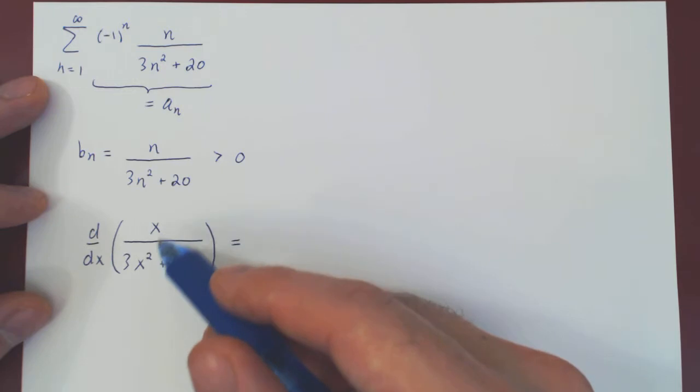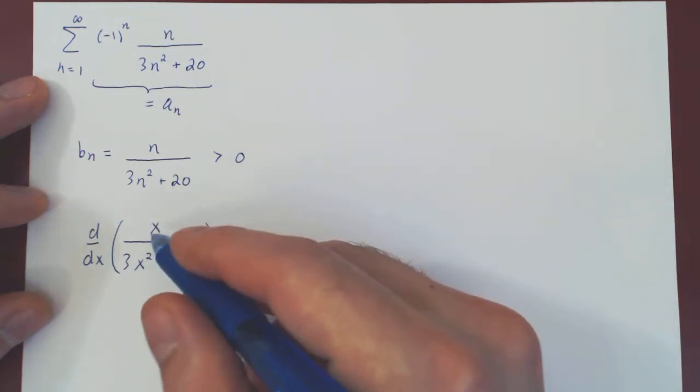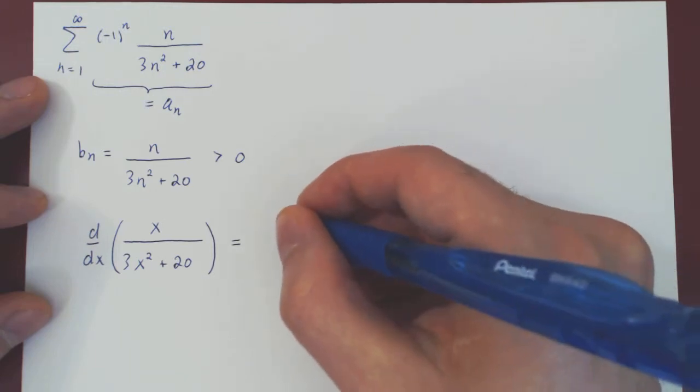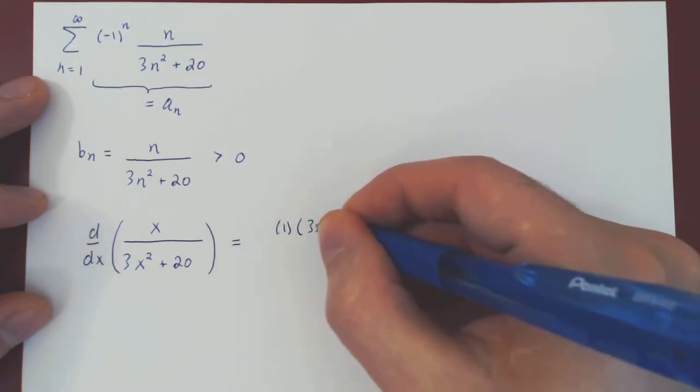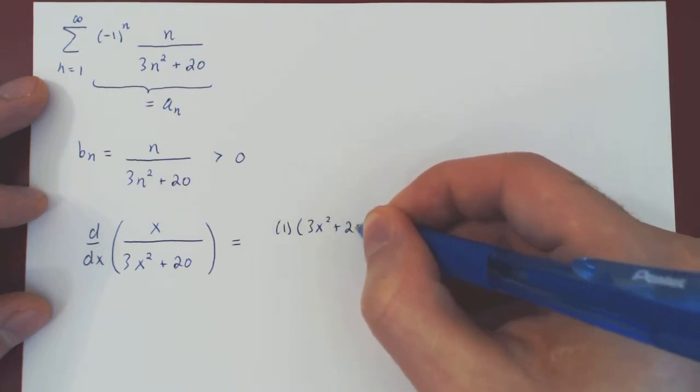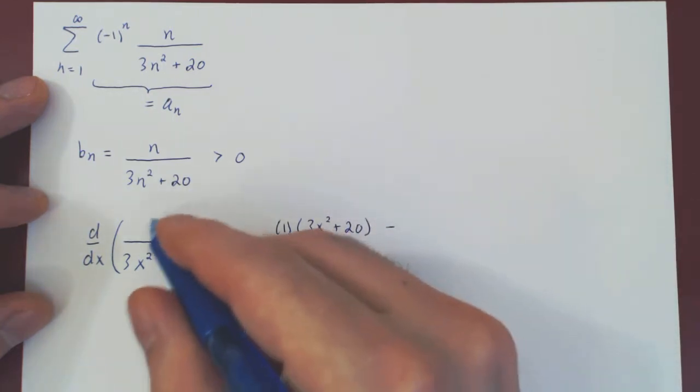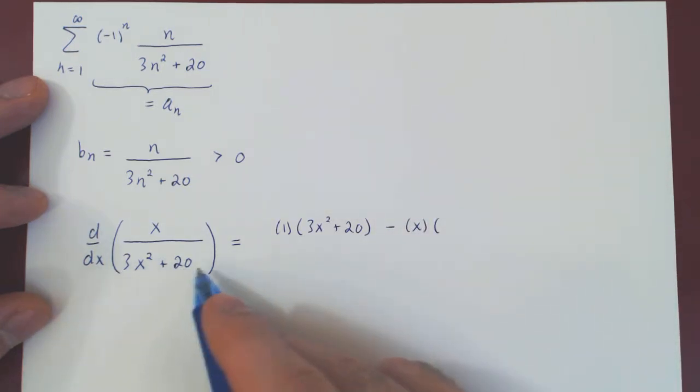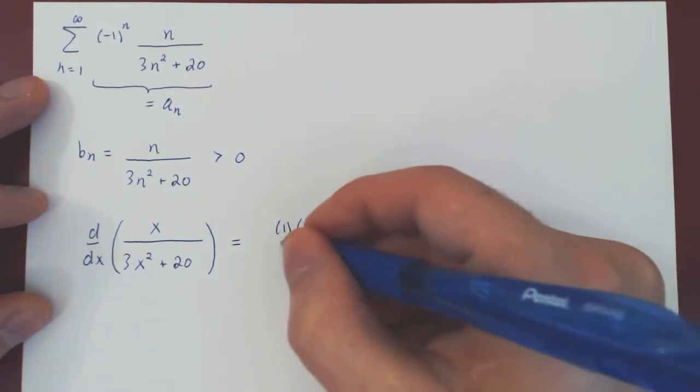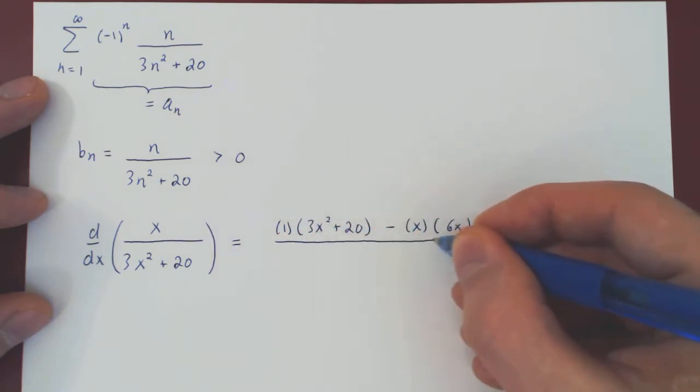So to differentiate x over 3x squared plus 20, we have to use the quotient rule. Derivative of the numerator is 1 times our denominator, 3x squared plus 20, minus the numerator, x, times the derivative of our denominator, which is 6x, over the denominator all squared.